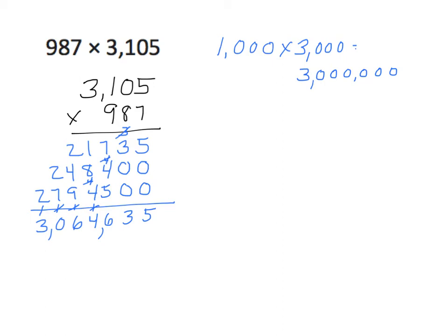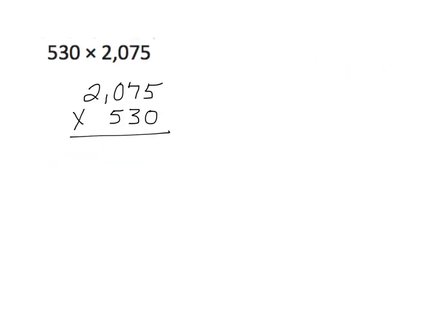One more example. For our final example, we have 530 times 2,075. Let's first do our estimating: 530 rounds to 500 and 2,075 rounds to 2,000. 2 times 5 is 10, and we tack on five more zeros — the answer should be near 1,000,000. Note that I changed the order again using the commutative property. I did not want the four-digit number on the bottom because that would give me four partial products, which I want to avoid.